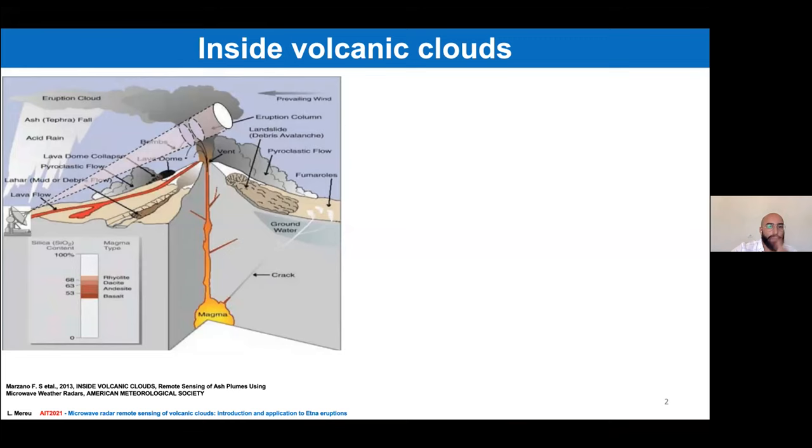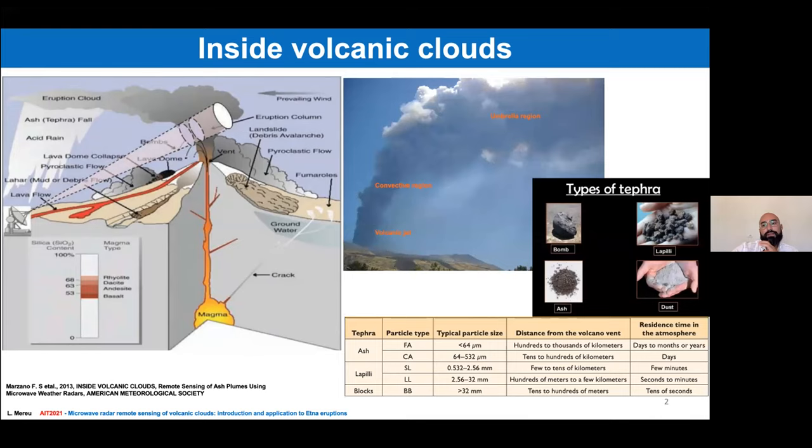Within the plume, we can find different types of tephra: from dust and ash, to lapilli and bombs, each one characterized by different sizes, distance from the volcano vent, and residence time in the atmosphere.